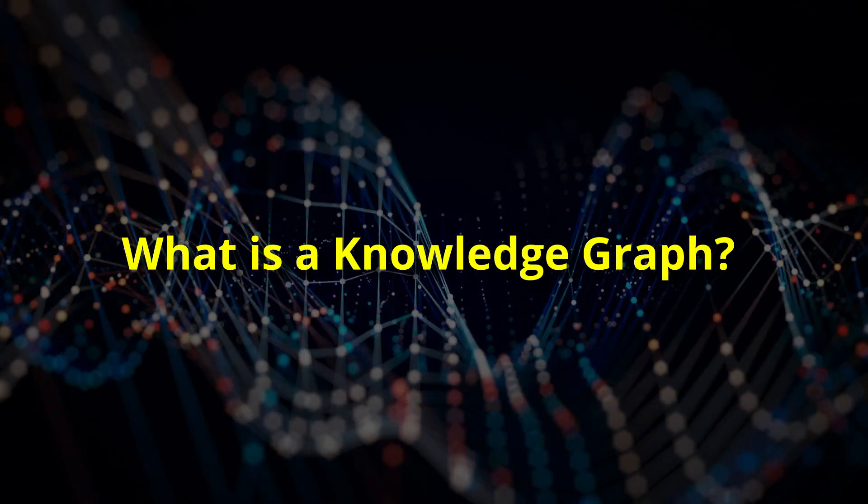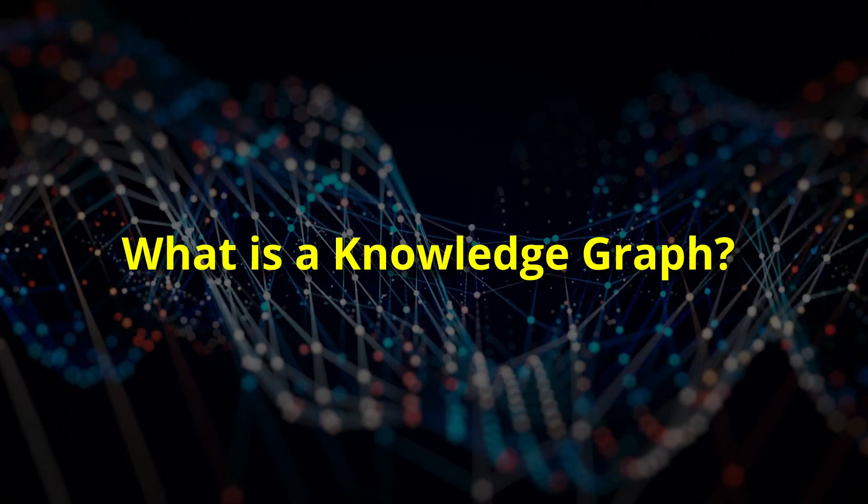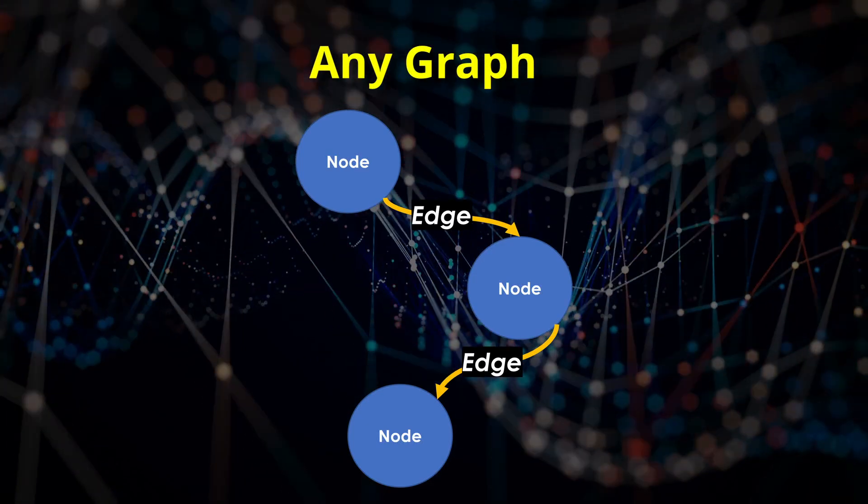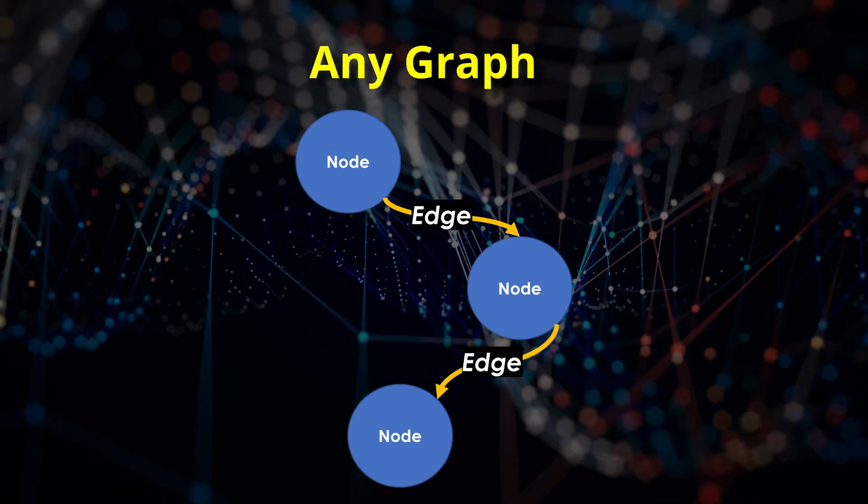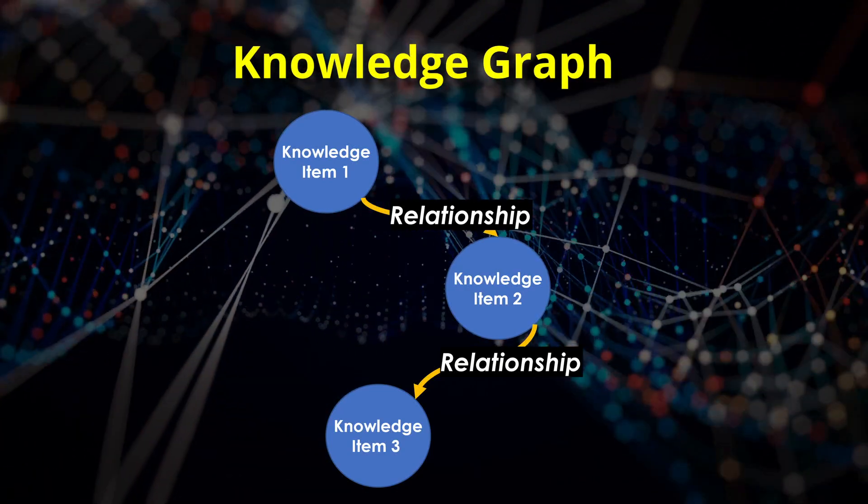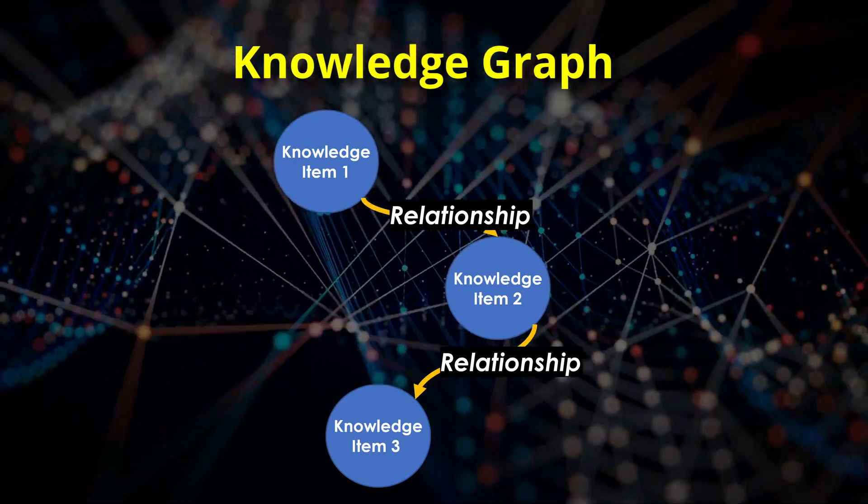Knowledge Graphs have been around since the 1970s, but have taken a backseat to machine learning in recent years. Let's break it down. A knowledge graph consists of nodes, representing snippets of knowledge, connected by edges, representing relationships between them.